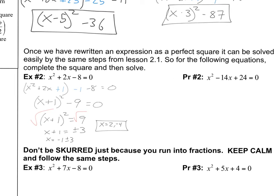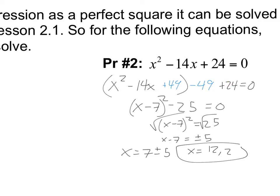Try practice number 2 on your own — pause the video and check back when you're done. For the solution: separate out, put the 24 over here, x squared minus 14x. Take 14 divided by 2 to get negative 7; negative 7 squared gives 49. Add 49 and subtract 49 at the same time. Rewrite as x minus 7 squared. Negative 49 and 24 combine to make negative 25, still equals 0. Add 25 to both sides: x minus 7 squared equals 25. Take the square root: x minus 7 equals plus or minus 5. Add 7: x equals 7 plus or minus 5. So x equals 12 or x equals 2.